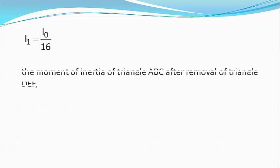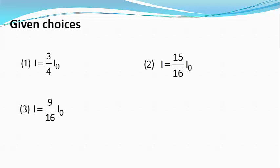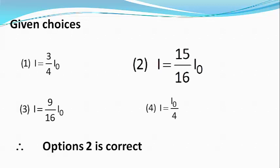Very clearly, the moment of inertia of the triangle ABC after removal of the triangle DEF, I equals I0 minus I1, or I equals 15 by 16 into I0. Our answer matches with option 2. Therefore, option 2 is the right answer.